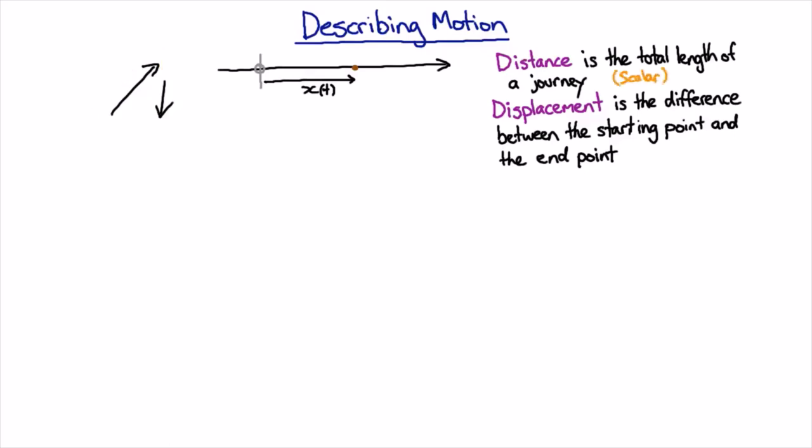Whereas displacement does care about direction. If I'm there, that is a different displacement to there. And so displacement has direction. And when we're just on a line, it can only be positive or negative, but that means it's a vector quantity.